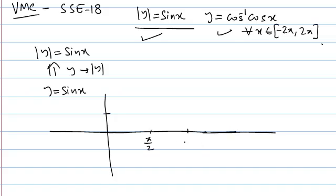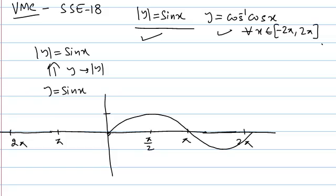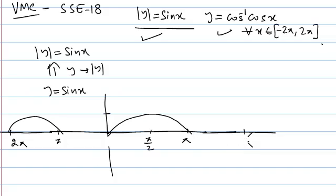So we draw the graph of sin x. Key points are π/2, π, 2π on both sides. This is the graph of sin x. Then we apply the mod transformation: we reject the lower half and take the reflection of the upper half into the lower half.